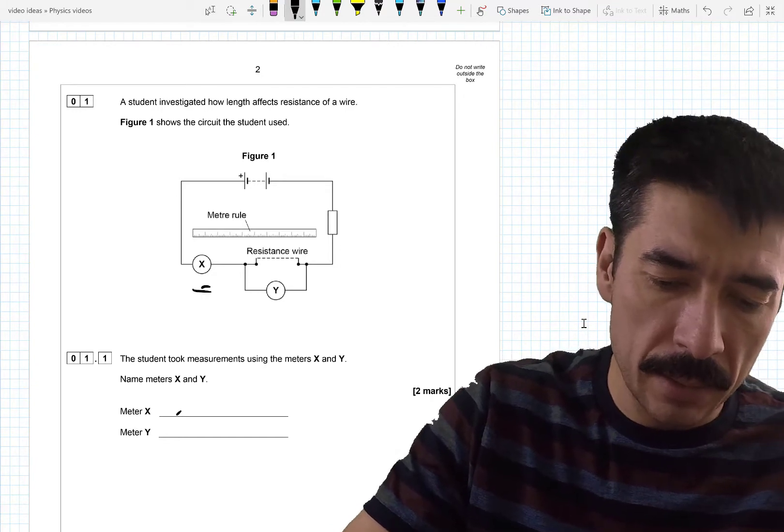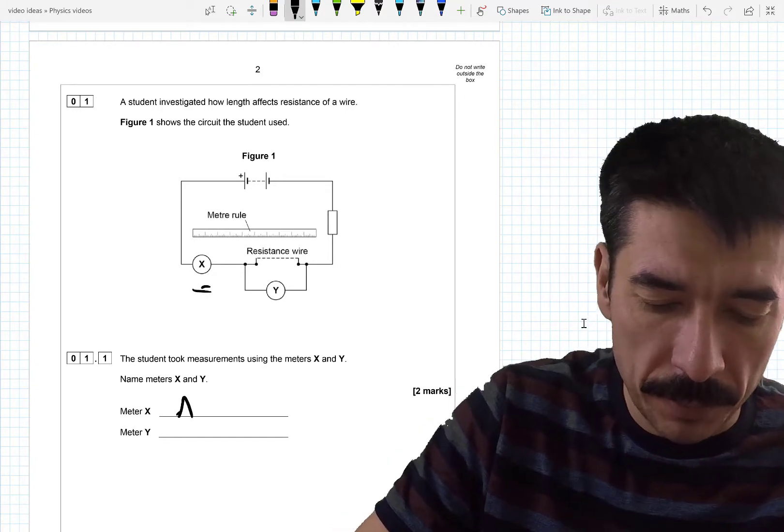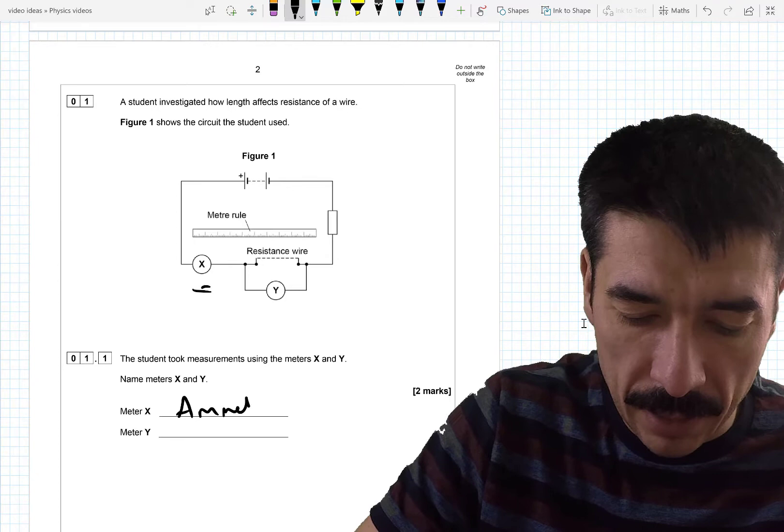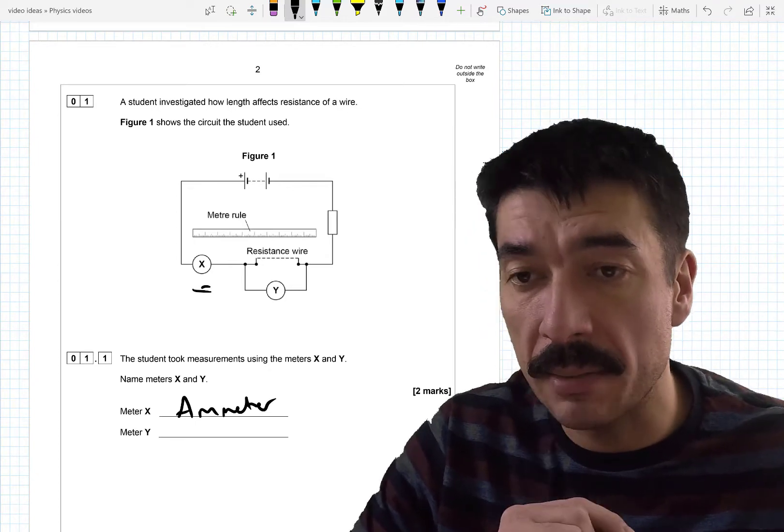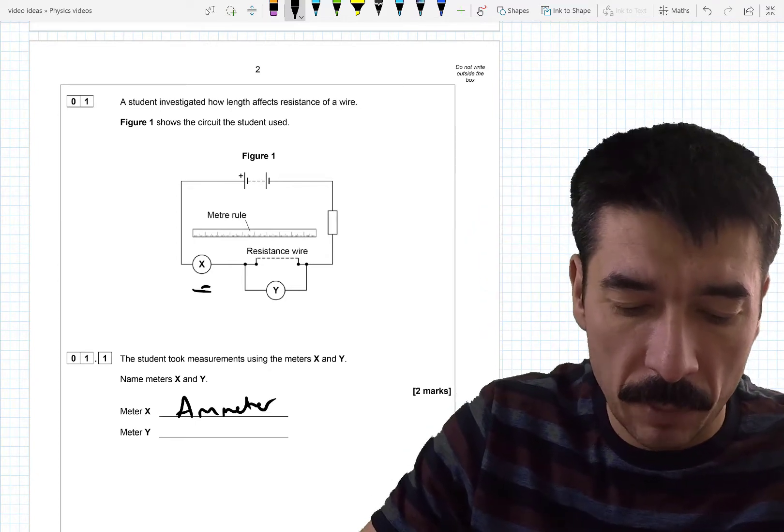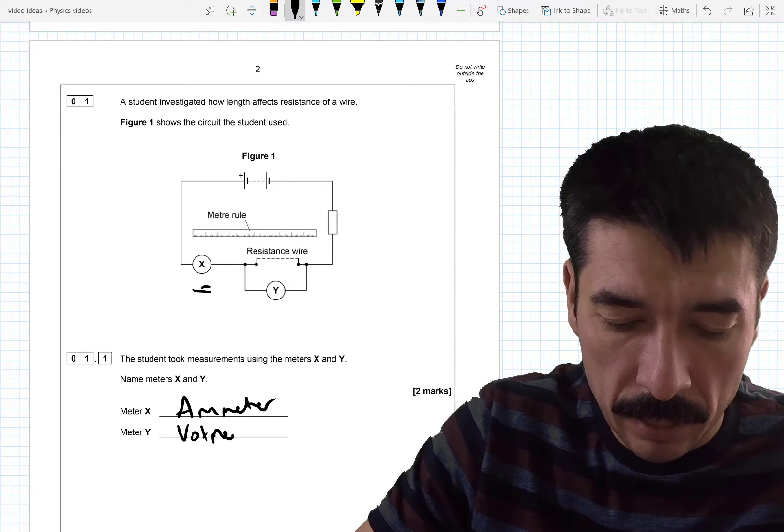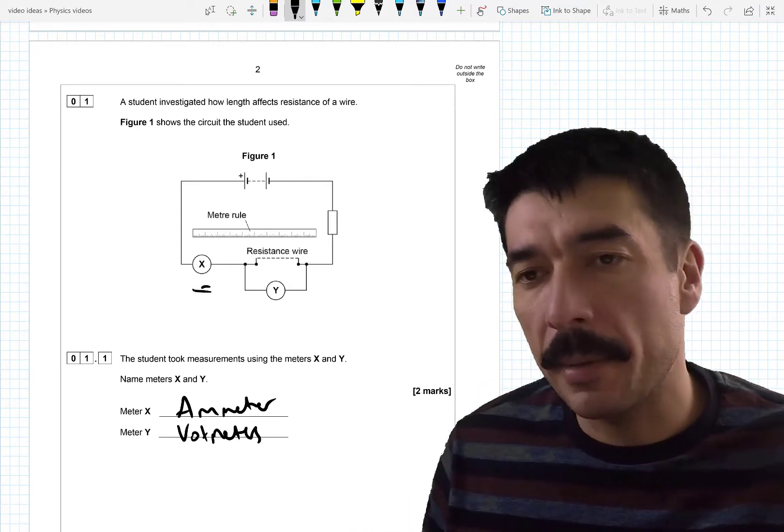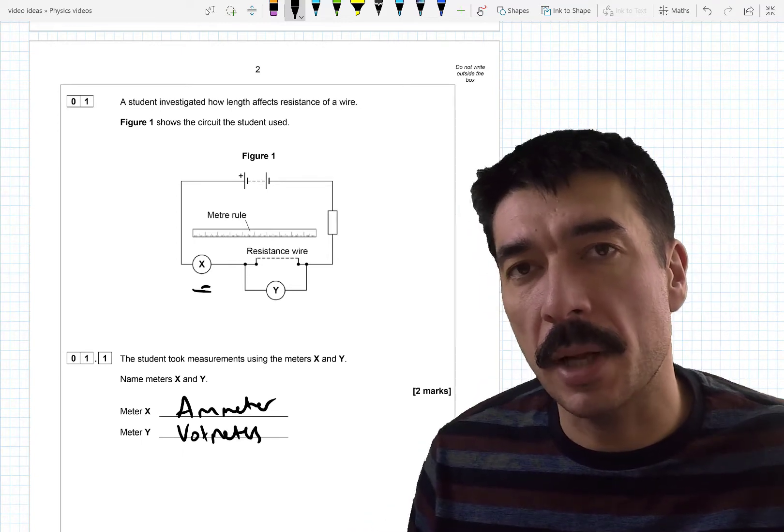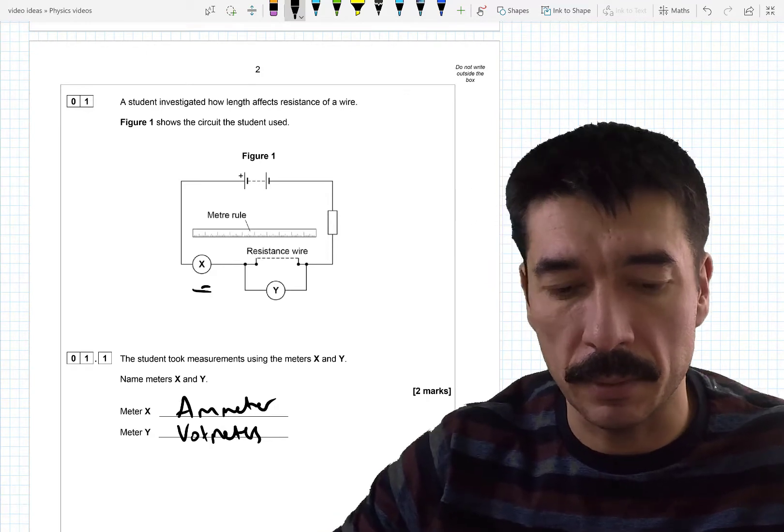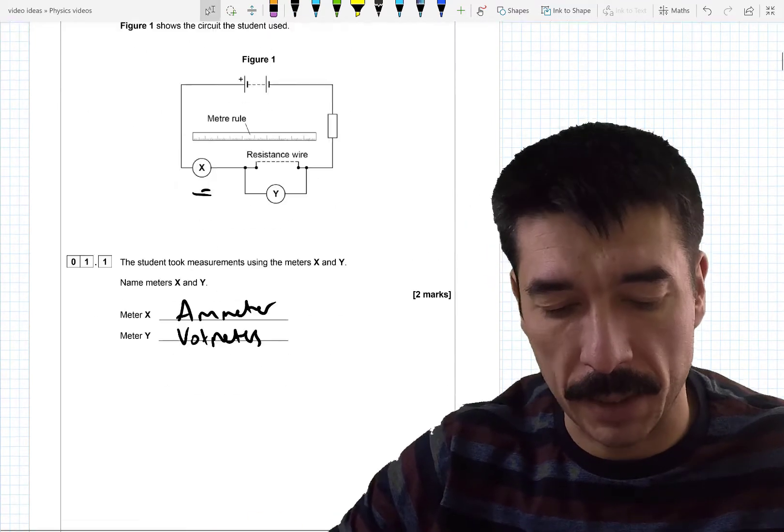So X is here. You'd have to place an ammeter here. Ammeters go in series. They measure current and voltmeters go in parallel and they measure the potential energy difference per coulomb of charge either side of a component or piece of wire in this case.